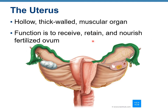The uterus is a hollow, thick-walled muscular organ whose function is to receive, retain, and nourish the fertilized ovum. Here the uterus is shown with the uterine tubes in green. When the oocyte is ovulated and fertilized inside the tube, it moves toward the uterus, where the embryo will develop.